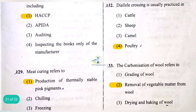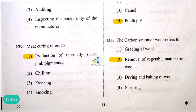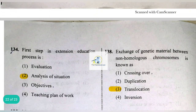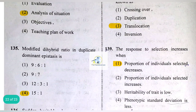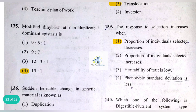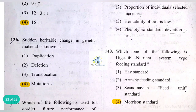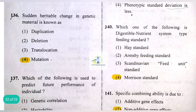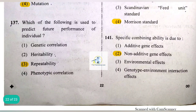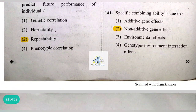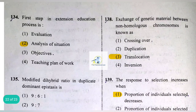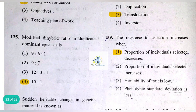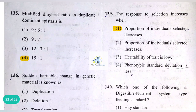Goal-oriented social groups are secondary groups. Maximum heterosis is observed in the F1 generation. Diallel crossing is usually practiced in poultry. Carbonization of wool refers to removal of vegetable matter from wool. The first step in extension education processes is analysis of situation. Modified dihybrid ratio in duplicate dominant epistasis is 15:1. A sudden heritable change in genetic material is known as mutation. Repeatability is used to predict the future performance of an individual.